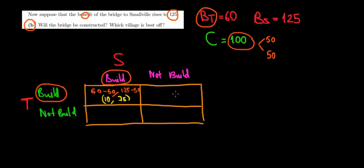Now we go to the next cell. If Tiny Town builds and the other guy decides not to build, he would have a cost of zero. Tiny Town would incur the entire cost of 100. So what would be his net benefit? The benefit of 60 for Tiny Town minus the entire cost of 100. And for the other guy, he would have a benefit of 125 minus no cost. So the payoffs over here would be minus 40 and 125.